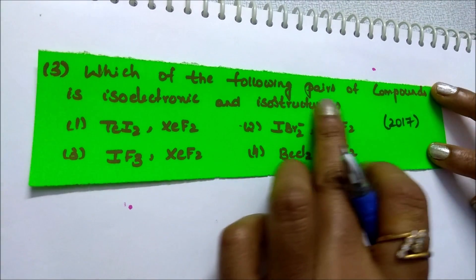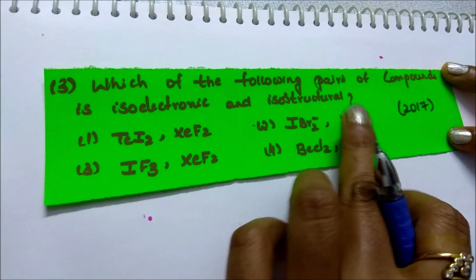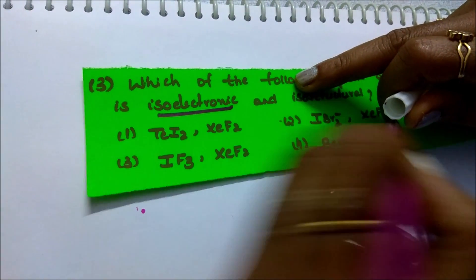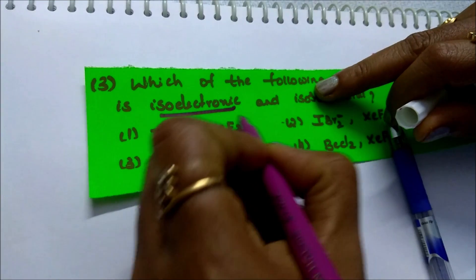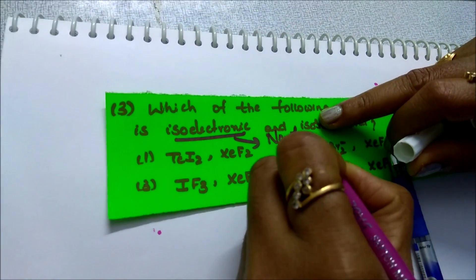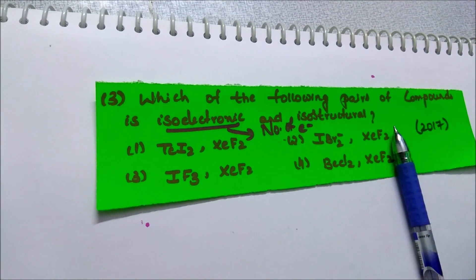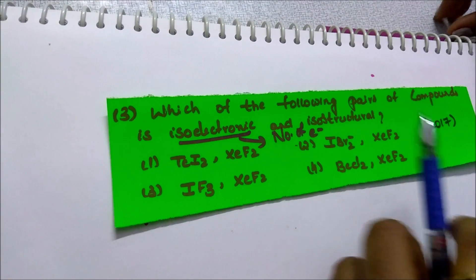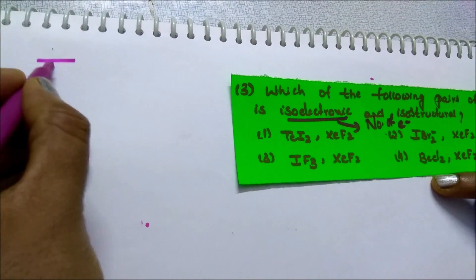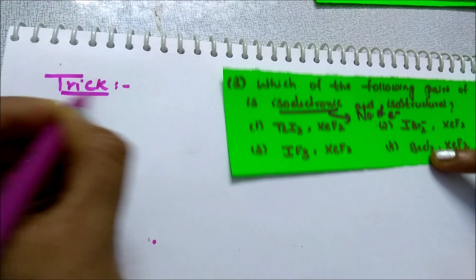Which of the following pairs of compounds is isoelectronic and isostructural? Isoelectronic means same number of electrons, and isostructural means same structure. Here is a small trick: no need to calculate the total number of electrons in the molecule — just count the electrons in the valence shell.